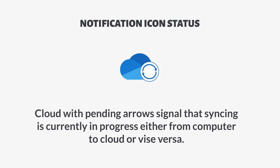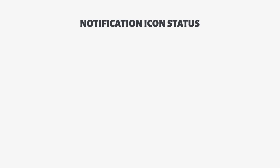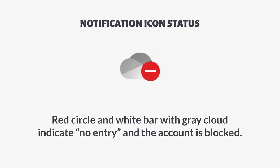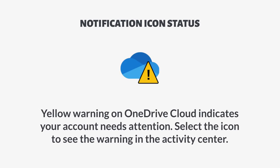A cloud with pending arrows signals that syncing is currently in progress, either from the computer or from the cloud to the device. A red circle with a white bar on the gray cloud indicates no entry and the account is blocked. A yellow warning on the OneDrive cloud indicates your account needs attention. Select the icon to see the warning in the activity center.